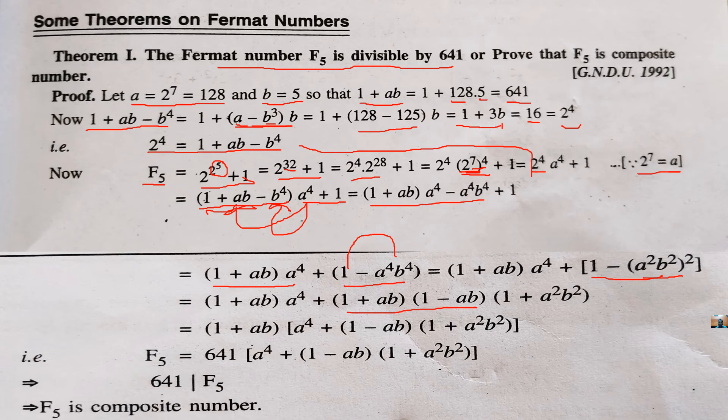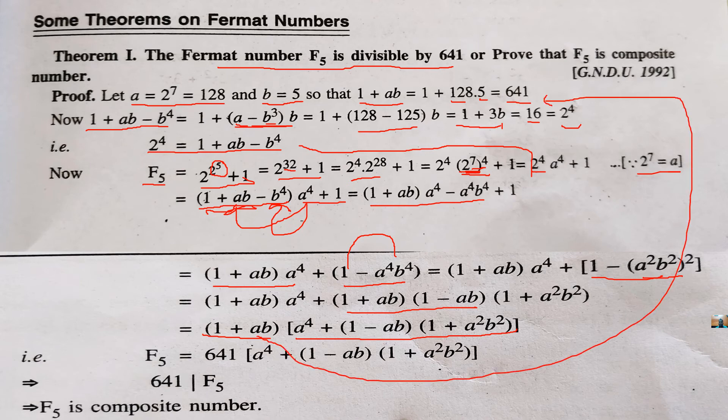Now, take common from the whole part 1 plus ab. So, we get two factors of the expression f5 and we know that what is 1 plus ab? 1 plus ab we have already solved. This is 641. By using this, we get f5 value for this.